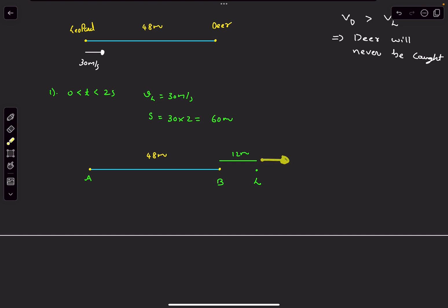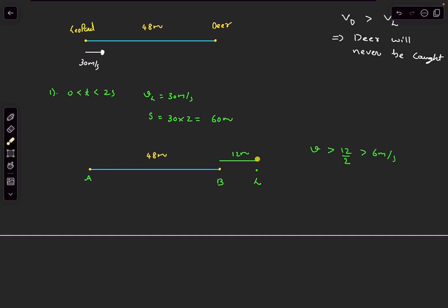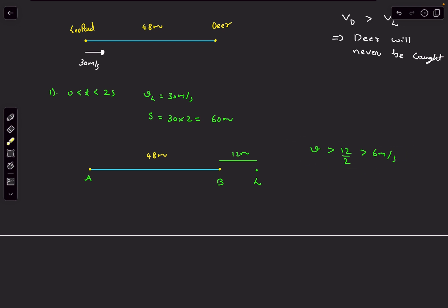We want the deer to be in front of the leopard at t=2s. So the deer must cover more than 12 meters in 2 seconds, meaning its speed must be greater than 12÷2 = 6 m/s. If the deer travels at exactly 6 m/s, it will be at that same location as the leopard's t=2s position — that's the bare minimum. If the deer travels slower than 6 m/s, it gets caught before 2 seconds, which we don't want. So is the answer 6 m/s?